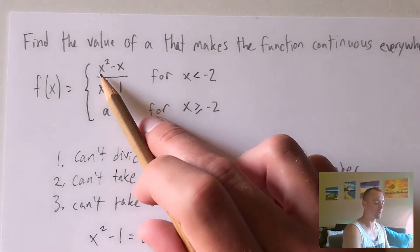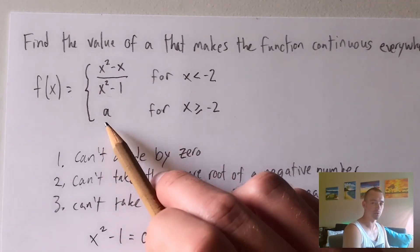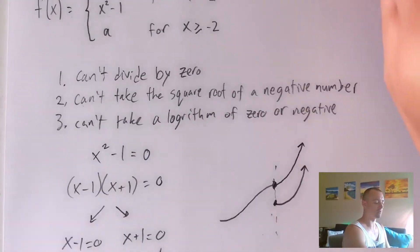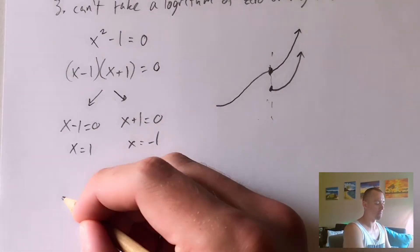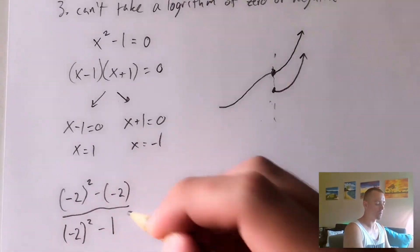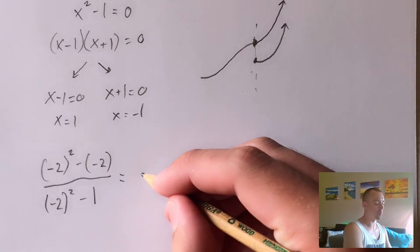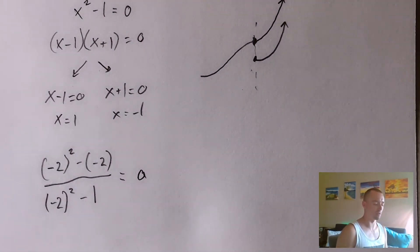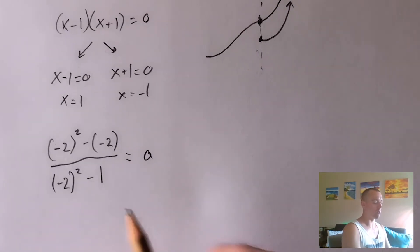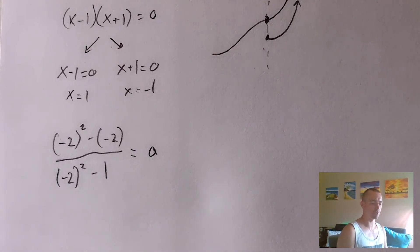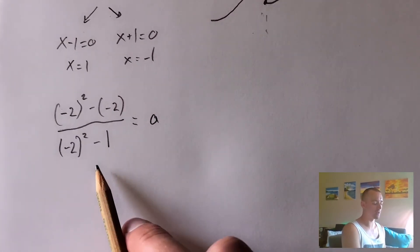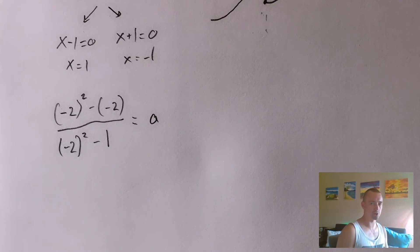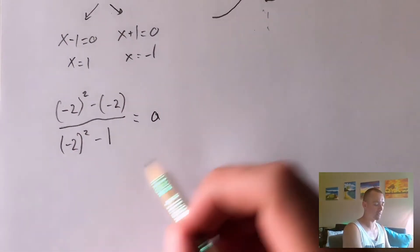We plug X equals negative two into X squared minus X all over X squared minus one, and set that equal to whatever we get when we plug X equals negative two into the function A. Since function A doesn't have any X's — it's just a constant — the output is just A no matter what X is. Now we solve this equation. The left side has no A's and the right side has just one A, so we simplify the left side and that tells us what A is.